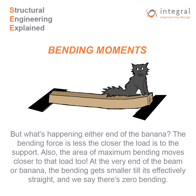But what's happening at either end of the banana? The bending force is less the closer the load is to the support. Also, the area of maximum bending moves closer to the load. At the very end of the beam or banana, the bending gets smaller so it is effectively straight, and we say there's zero bending.